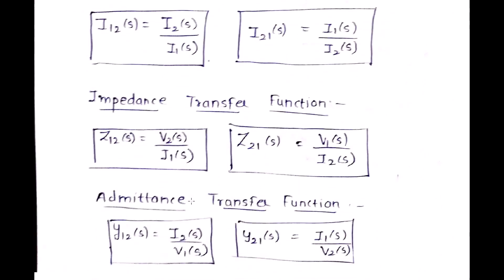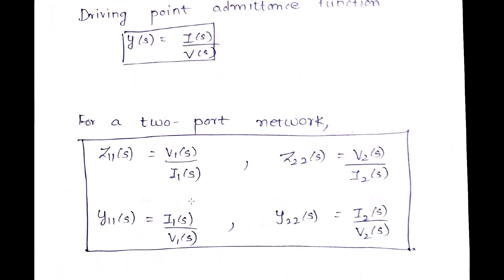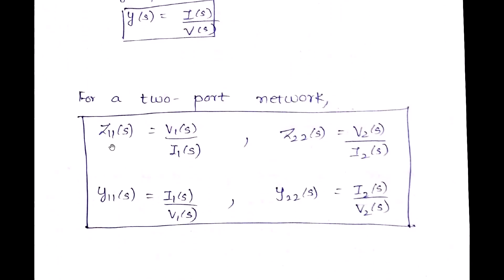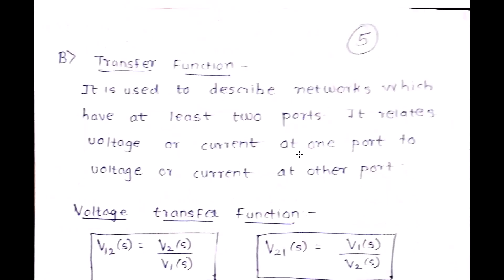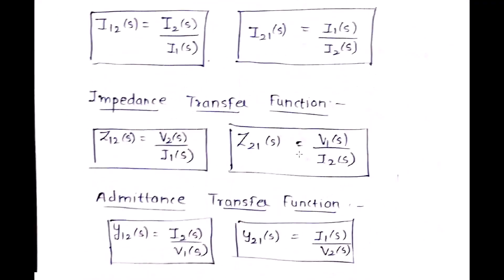For the impedance transfer function, unlike the driving point case where impedance is at a single port (Z11 or Z22), here impedance involves a combination of two ports. Z12(s) = V2(s) / I1(s) — voltage at port 2, current at port 1. Z21(s) = V1(s) / I2(s). The admittance transfer function Y12(s) = I2(s) / V1(s), and Y21(s) = I1(s) / V2(s).